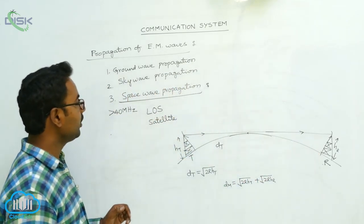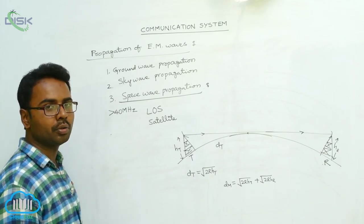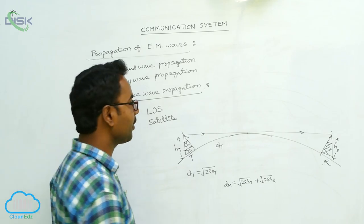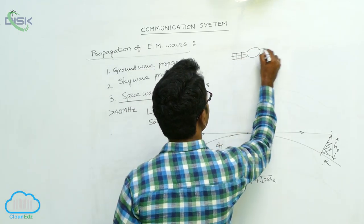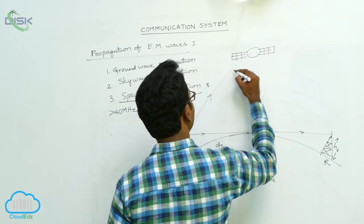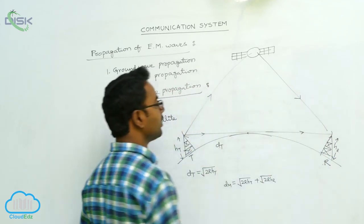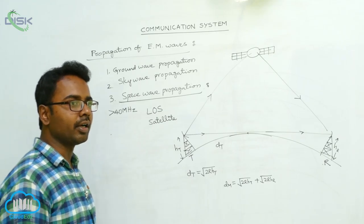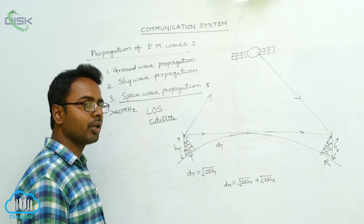Space wave propagation is also used in satellite communication because space waves propagate in straight lines. The signals are directly sent to the satellite and come back to the receiver. That is the reason why space wave propagation is also used in satellite communication.